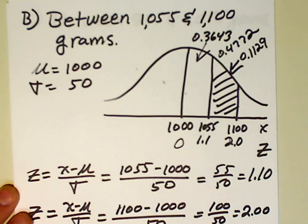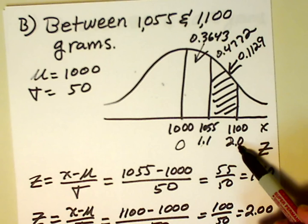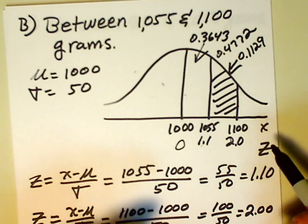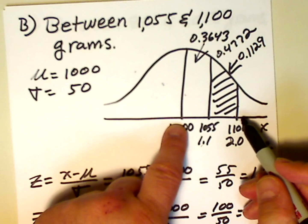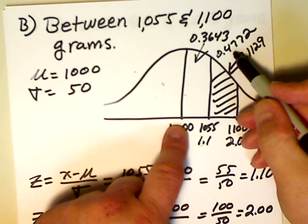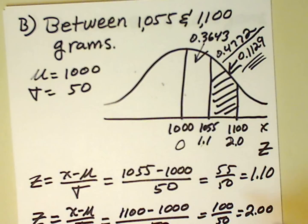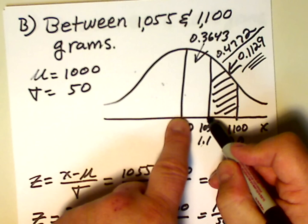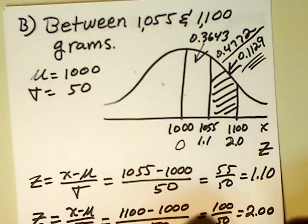So, let me recap how we did that one. We calculated z values for 1055 and 1,100. They turned out to be 1.1 and 2.0. We found the associated areas from 1,000 to 1055. It's 0.3643. And from 1,000 to 1,100, it's 0.4772. And what we did was we took this larger area, subtracted off the smaller area, and that left us with the shaded area. Let's look at part C.